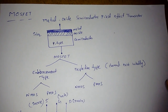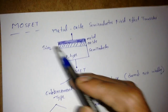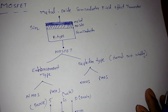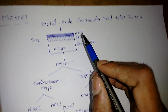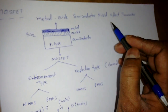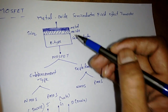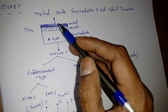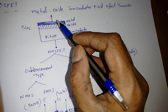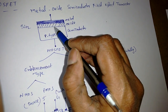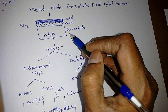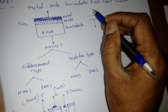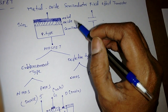Good evening everyone. In this lecture I'm going to discuss the MOSFET briefly. MOSFET stands for Metal Oxide Semiconductor Field Effect Transistor — why it is called a field effect transistor will be clarified later. The physical structure has a metal layer, then an oxide layer, then a semiconductor. If a highly doped semiconductor is treated simply as a metal, that gives us the metal-oxide-semiconductor stack.